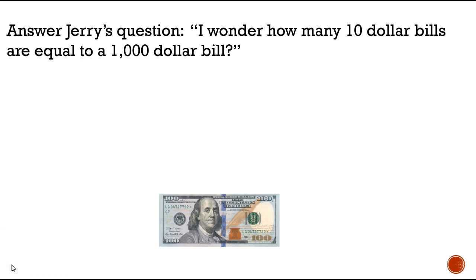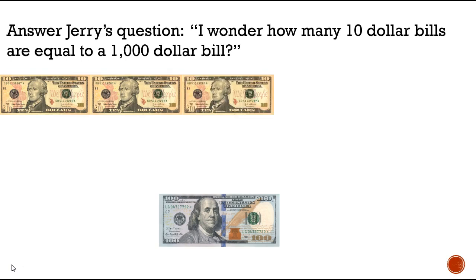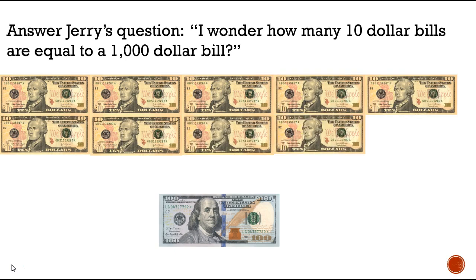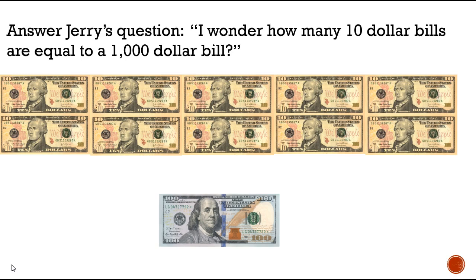Now we need to answer Jerry's question: how many $10 bills are equal to a $1,000 bill? The first step is to figure out how many $10 bills are in $100. We're going to count by tens: 10, 20, 30, 40, 50, 60, 70, 80, 90, 100. So there are 10 ten-dollar bills in a hundred-dollar bill. Keep that in mind as we figure out how many $100 bills are in a thousand.